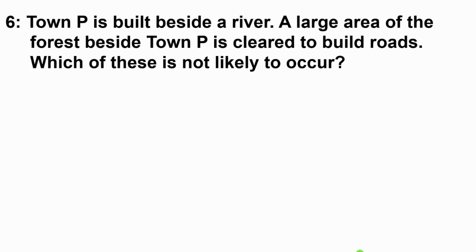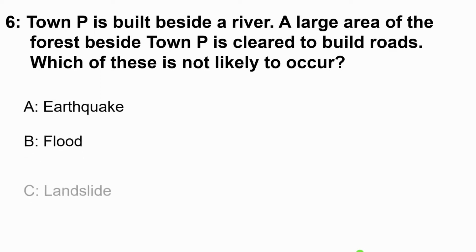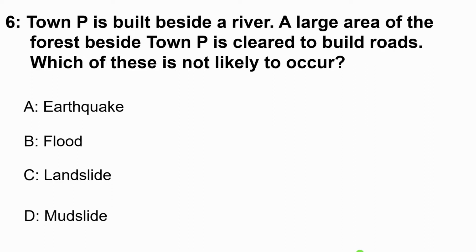Question 6: Tampi is built beside a river and a large area of the forest beside Tampi is cleared to build roads. Which of these is not likely to occur? The correct answer is C, landslide.